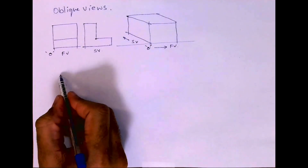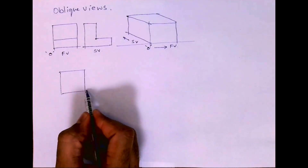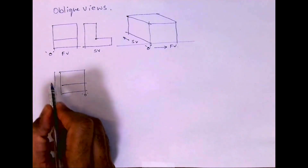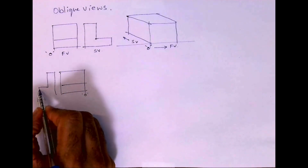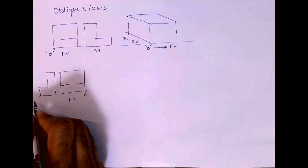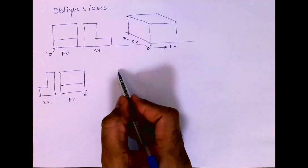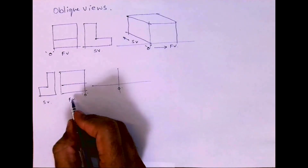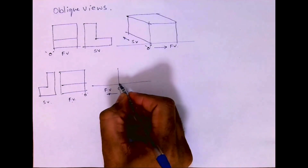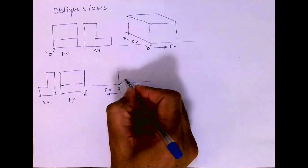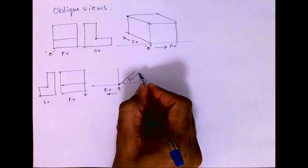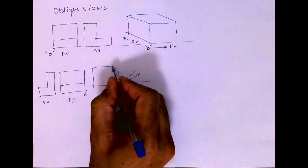If the origin is given on the right-hand side, note that earlier the origin was on the left-hand side. Here, the front view is on the left side, so you go towards the left. The right view is on the right side. This is how you will draw it in that case.